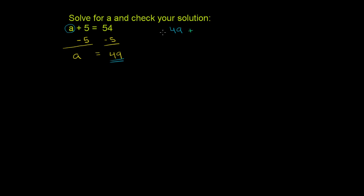49 plus, let me do that in that same shade of green. 49 plus 5 is equal to 54. We're trying to check this. 49 plus 5 is 54, and that indeed is equal to 54. So it all checks out.